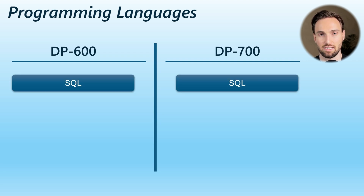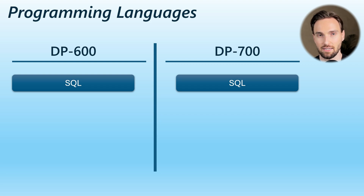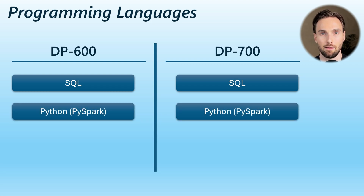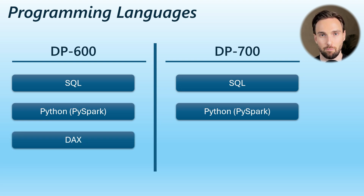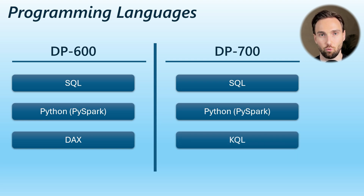In both exams, you need to know the basics of SQL, since both include SQL-related questions. Python — specifically PySpark — is also common to both exams and is the most common language used in notebook development. For the DP600 exam, you also need to be familiar with DAX, used in Power BI. Since Power BI is out of scope for DP700, DAX is not required there. Instead, DP700 replaces DAX with KQL (Kusto Query Language), used to query KQL databases in Fabric.